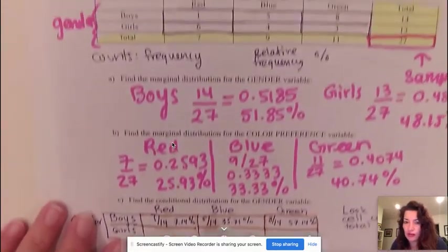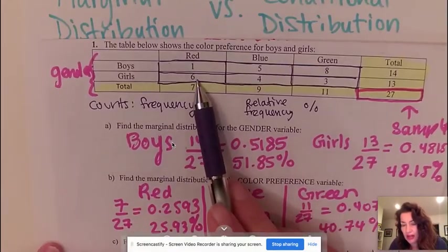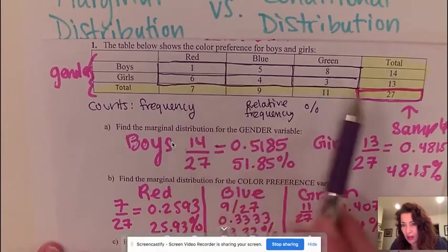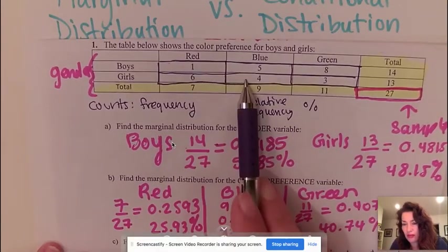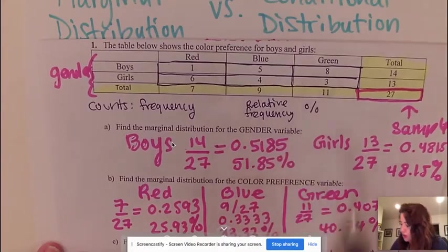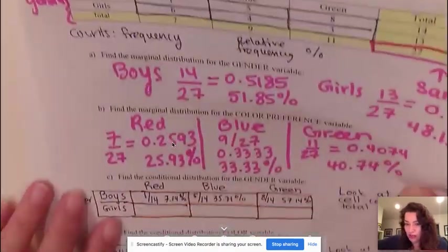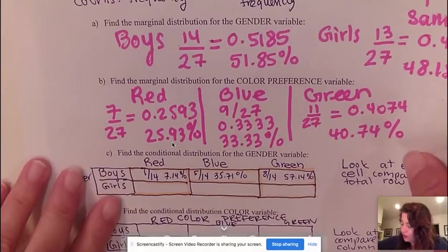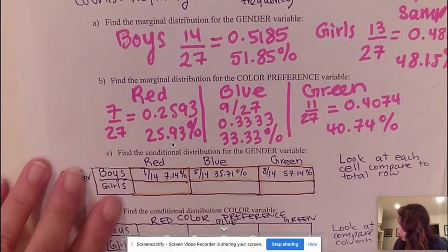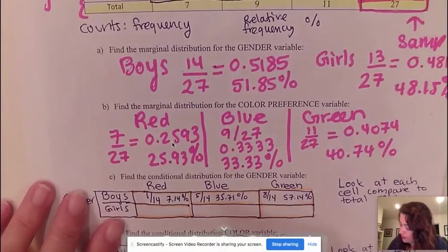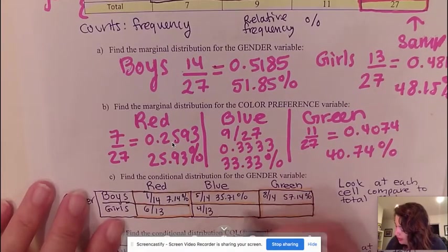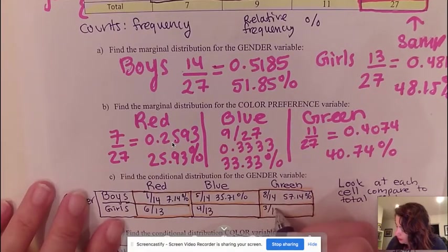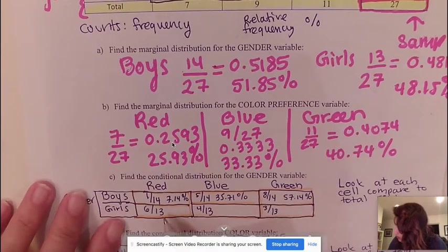So looking at the girls, I'm going to look at each cell and divide each count in that cell by its total. So this one will have 6 out of 13, 4 out of 13, and 3 out of 13 for a total of 13 out of 13. And then of course we will convert it to percentage. So again, for girls, it would be 6 out of 13, 4 out of 13, and 3 out of 13. And then we would calculate this as a percentage.